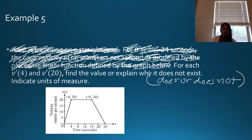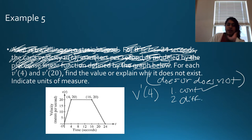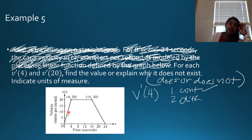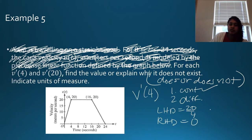For V′(4), I ask: is it continuous and differentiable? The limit from the left exists, the limit from the right exists, and the function value exists — they all equal 20, so it is continuous. But is it differentiable? My left-hand derivative is up 20 over 4 = 5. My right-hand derivative is the constant, so it's 0. They don't equal each other, so V′(4) does not exist.